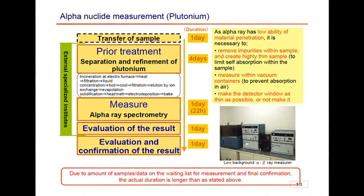Next, we would like to introduce how the nuclide analysis is carried out. Page 13 is an alpha ray nuclide measurement. The nuclides of alpha rays and beta rays have a tendency to not travel outside. Therefore, prior treatment and a special operation will be necessary for measurement. In the case of prior treatment for plutonium, following incineration at the electrofurnace, extracting water, heating, filtration, concentration of filtrated liquid, boiling and baking will be done. After that, it will be put in a special device called the alpha ray spectrometer. From the dispatched radioactive energy, the analysis of the type of alpha nuclides will be conducted. The analysis itself takes about a week. However, due to the waiting list and data organization, it now takes about two to three weeks to obtain the results.